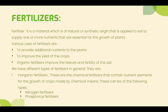The first type is inorganic fertilizers. These are chemical fertilizers that contain nutrient elements for the growth of crops, made by chemical means. Examples include nitrogen fertilizers and phosphorus fertilizers.